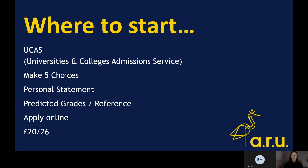This is an online process, so your application is all completed online and there is a one-off payment of either £20 for one application or £26 for more than one application. Our advice is, even if you're 100% sure of the university you're applying for, it's always better to have options, so paying the extra £6 to have four extra choices is the better thing to do. It might be that you change your mind last minute or you attend an open day, so having this option is preferable.